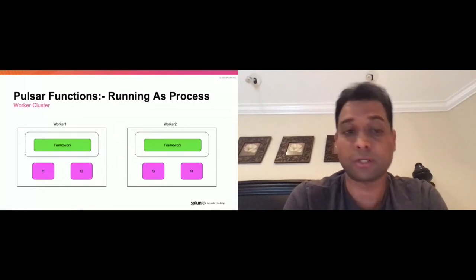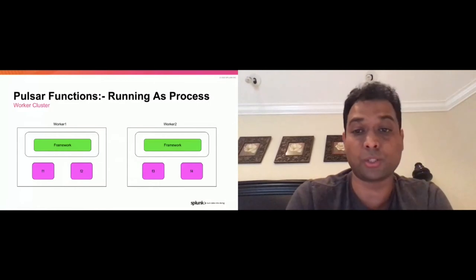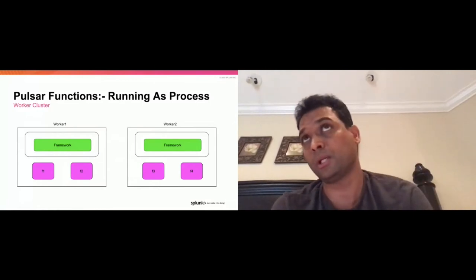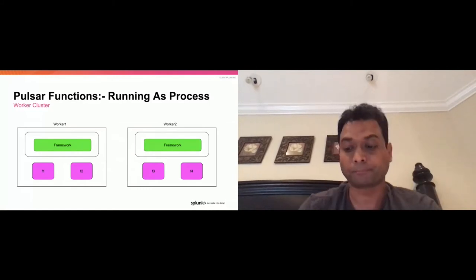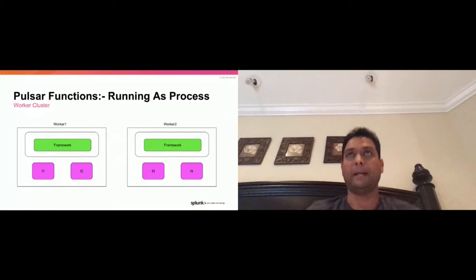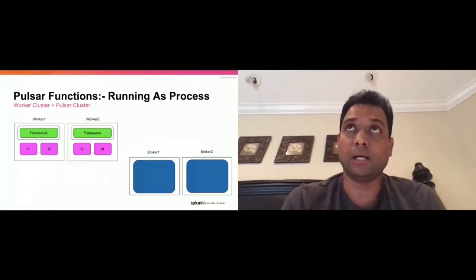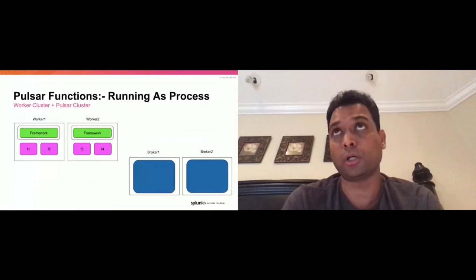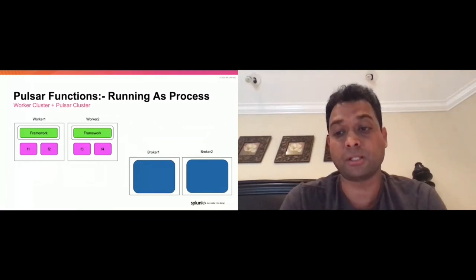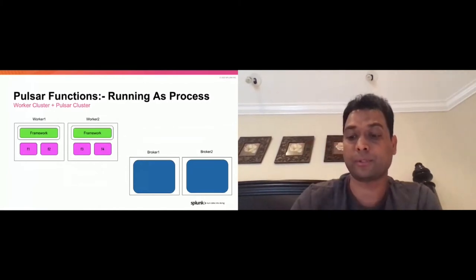Expanding that out using the same philosophy as threads: a series of workers set up this way becomes your worker cluster. Each worker runs functions as processes. There are two workers — worker one and worker two — each running two instances of functions as individual processes. Just as before, you can also run the processing cluster separately from the pub-sub messaging cluster, with the processing worker cluster on the left and broker one/broker two on the right, completely separated.